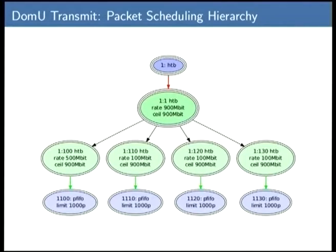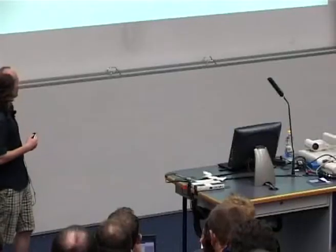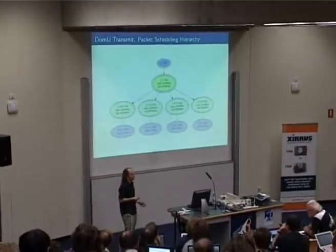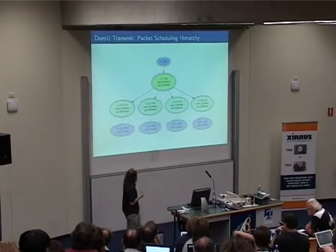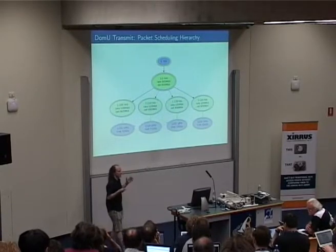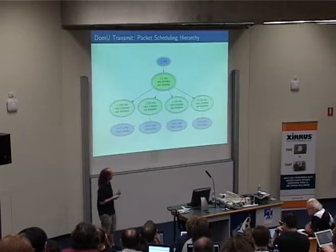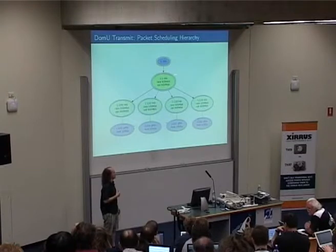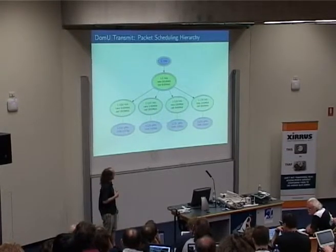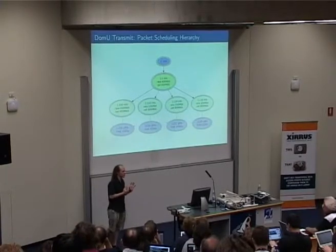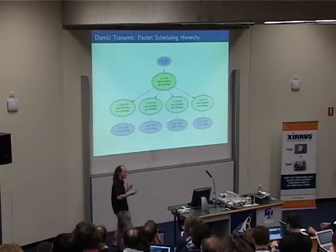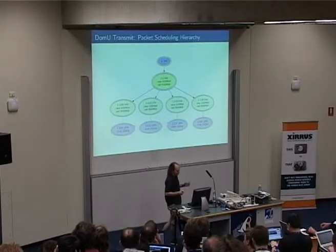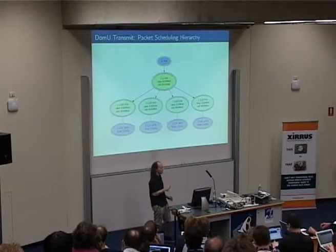Here is the class hierarchy I'm setting up for my three guests with borrowing. Each circle represents a guest — one for each of the three guests plus a default for traffic from the host itself. There is a parent which sets global limits. We have a global limit of 900 megabits per second; if only one guest is active, that's the limit. I've given one guest 500 megabits per second and the rest 100 each.